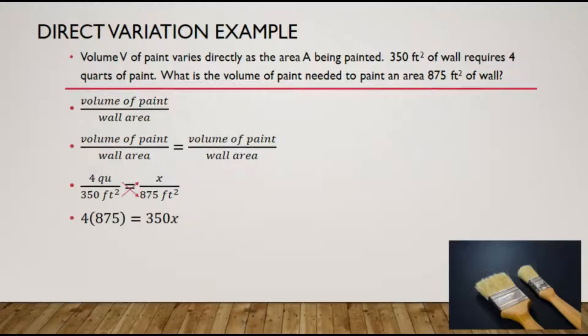Solving this, we'll do our multiplication on the left, and last, we'll divide both sides by 350 to get x by itself.